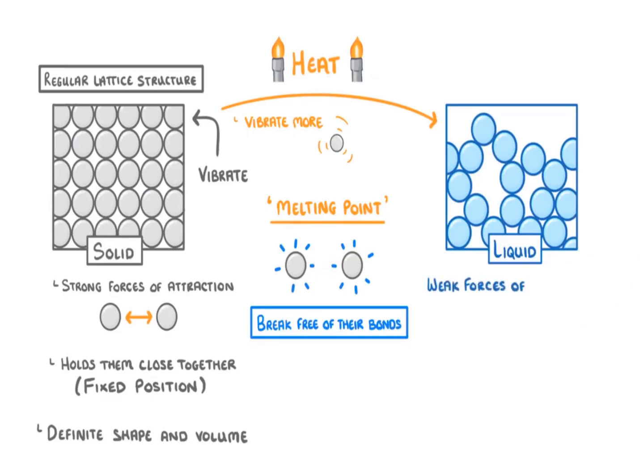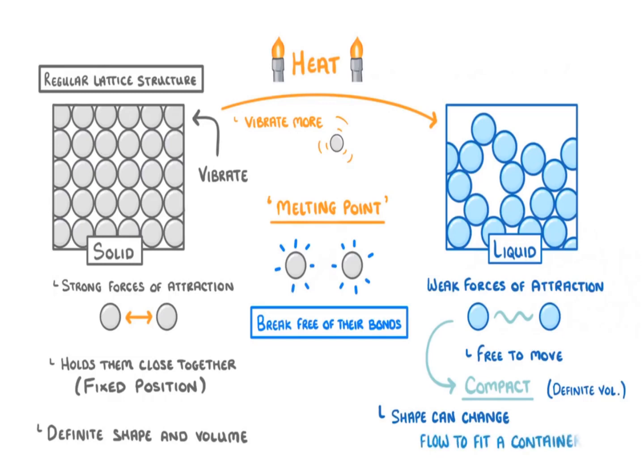In liquids, there are only weak forces of attraction between the particles, so they are free to move around and are arranged pretty randomly. However, the weak forces of attraction do mean that the particles tend to stick together and are fairly compact. This means they have a definite volume even though their overall shape can change, allowing them to flow to fit a particular container.